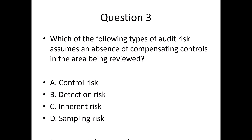Answer: C. Inherent risk. Explanation: Inherent risk exists independently of controls and represents the potential for material misstatement due to the nature of the area being audited. It assumes no mitigating controls are in place.